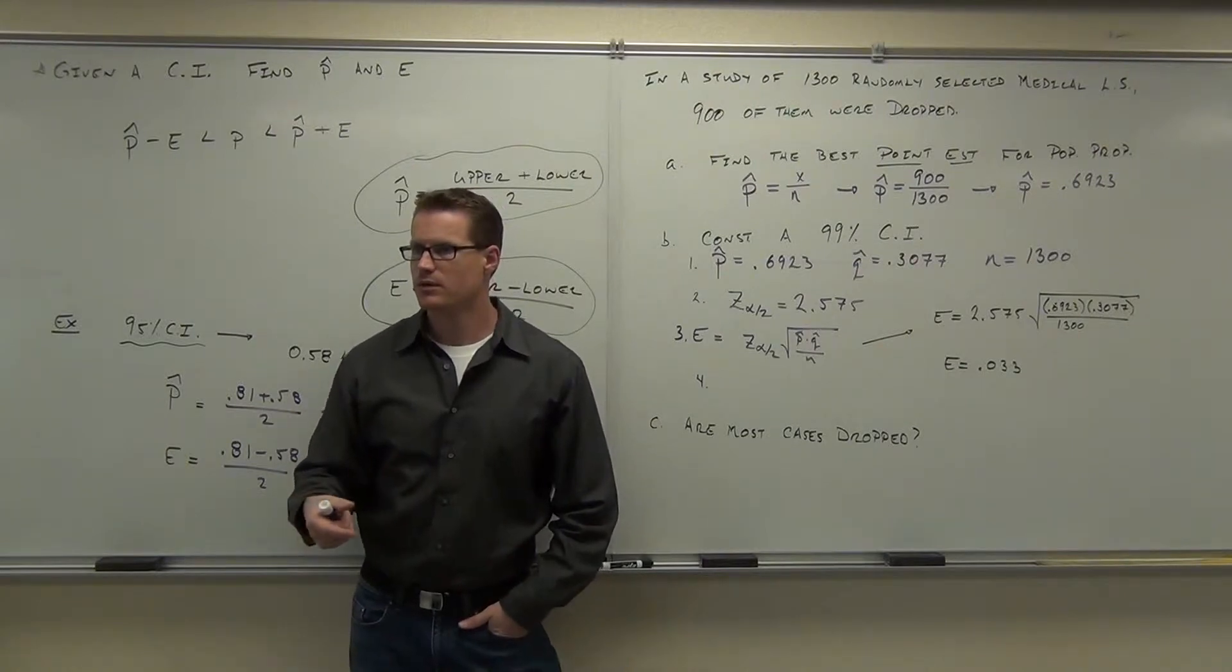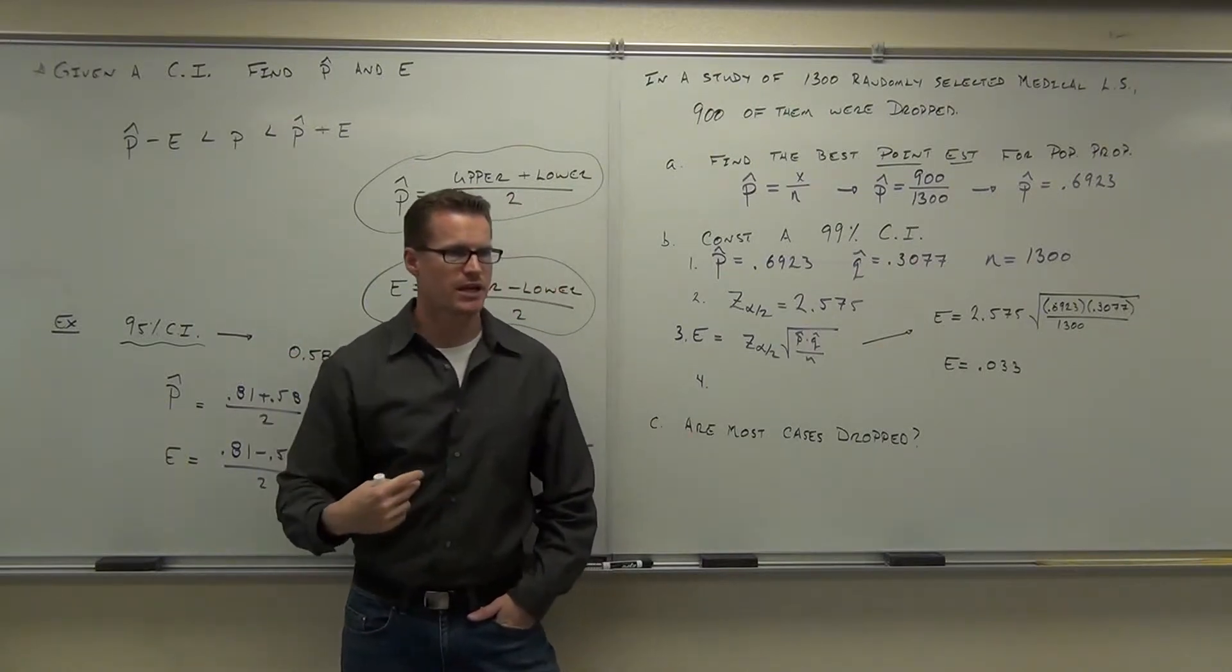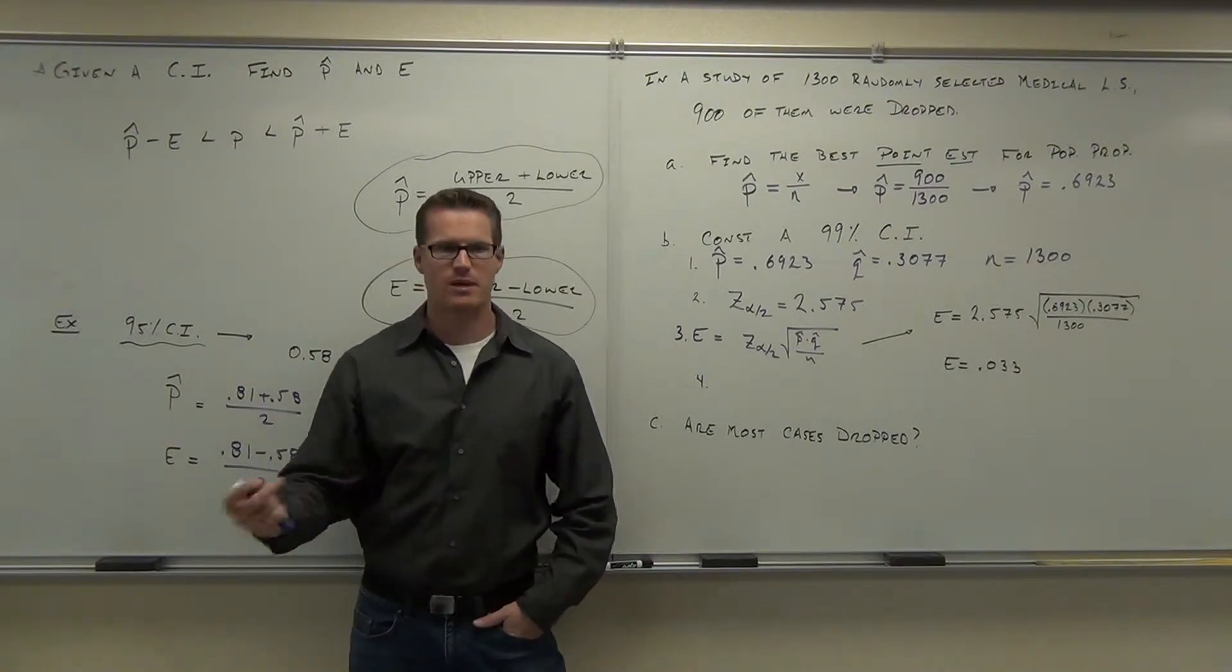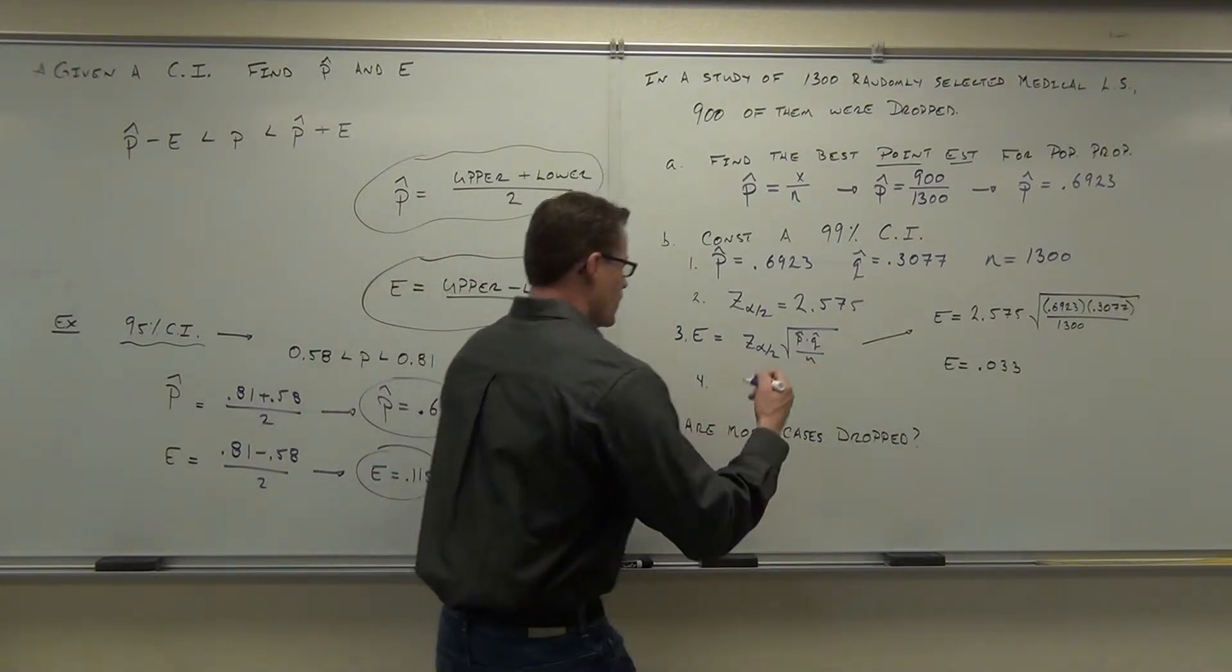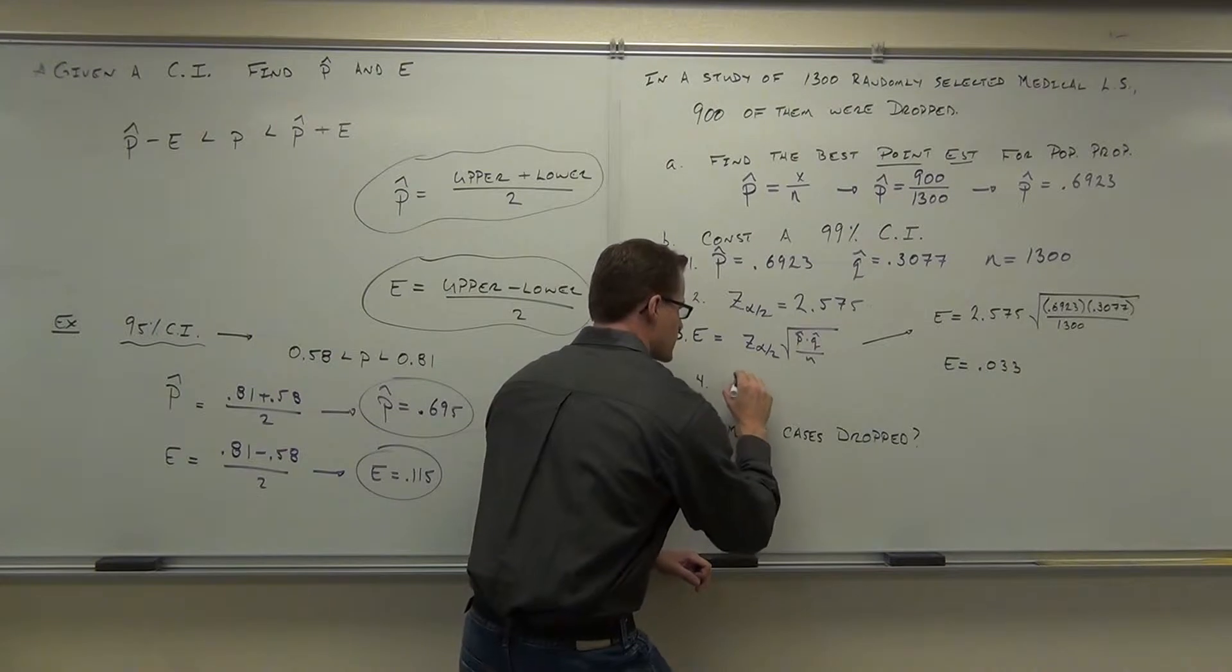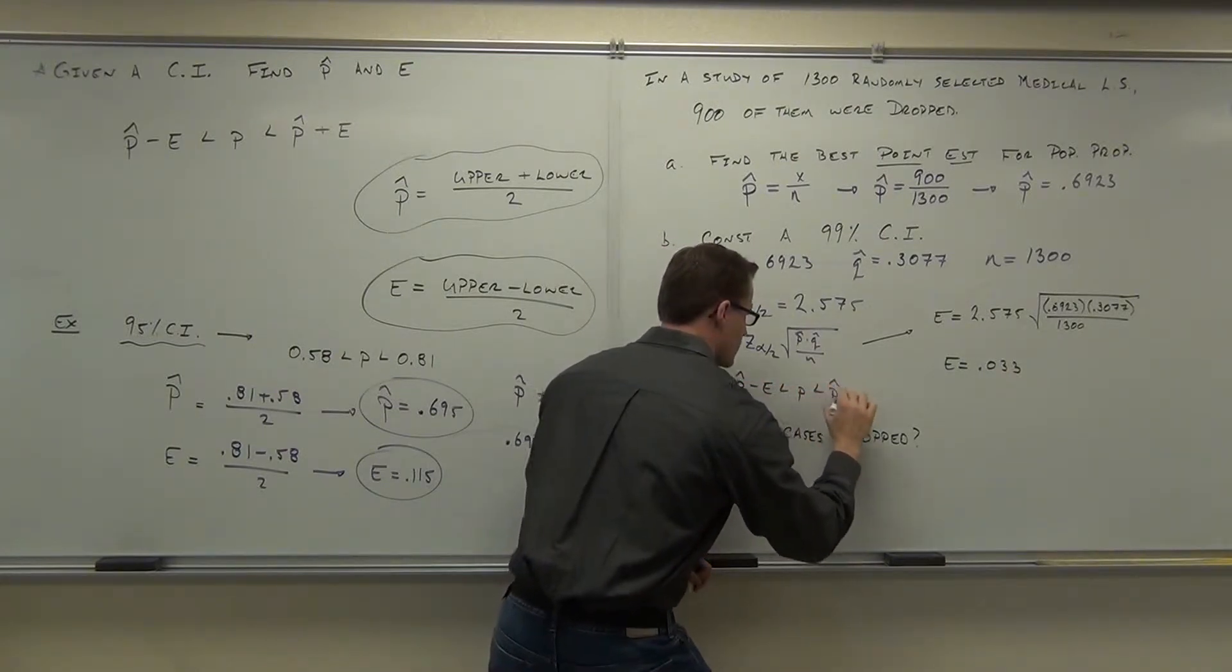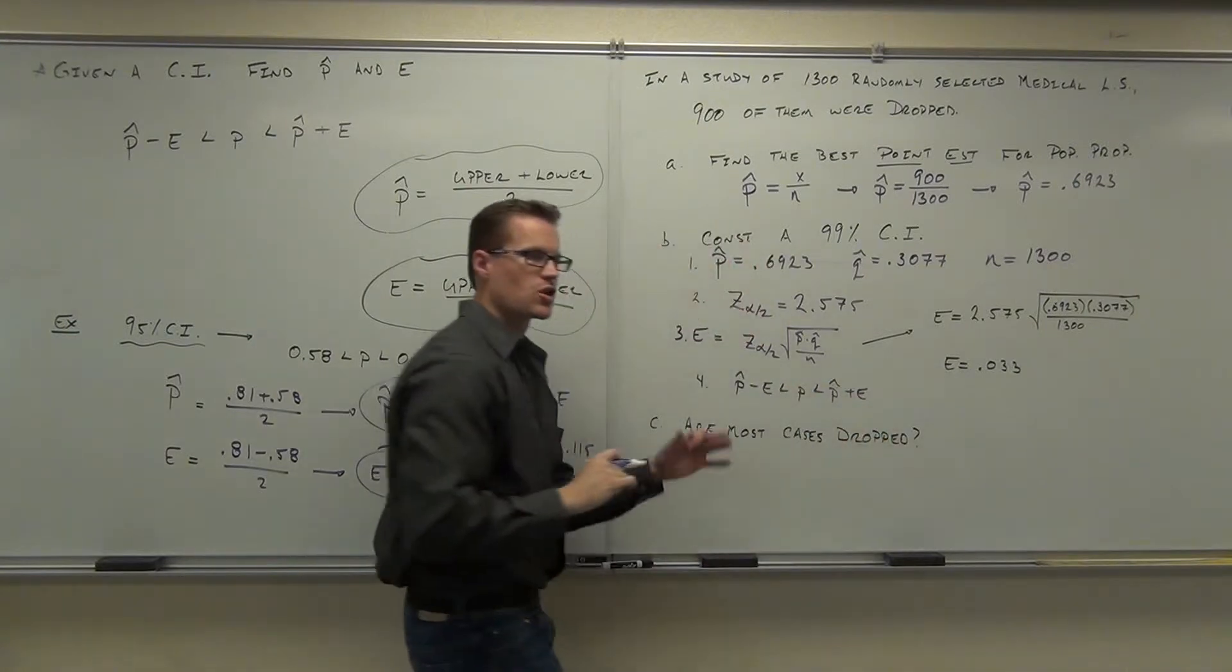Have you actually made up your interval? Do you have a range of numbers that you're 99% confident that your actual population proportion is going to fall in? Well, you better make up that range. Step number 4 is create your p hat minus e less than p less than p hat plus e. That is known as your confidence interval.